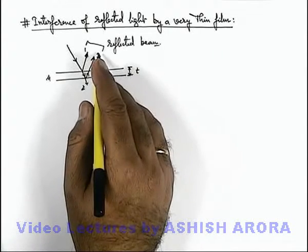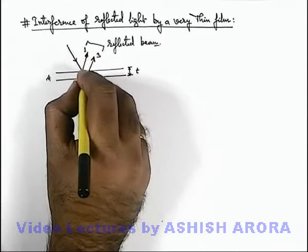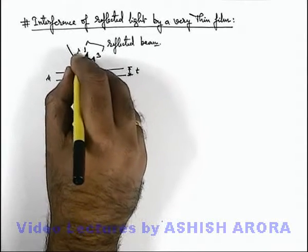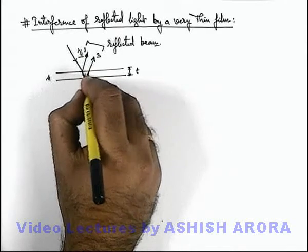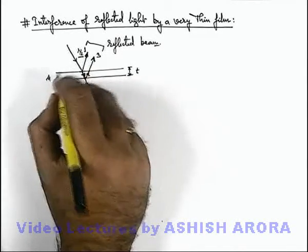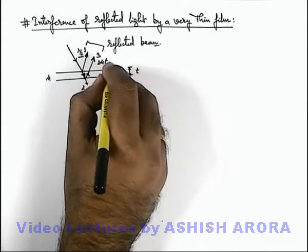In this situation, beam 1 which is reflected from the denser medium has a path of lambda by 2 added into it. And beam 3 has traveled an extra path of length 2t in the refractive index mu, then its equivalent path in air will be 2 mu t.